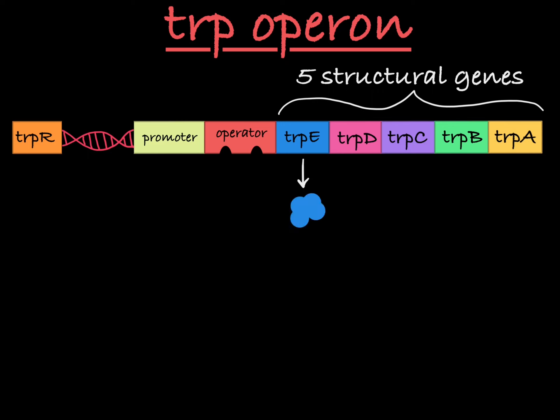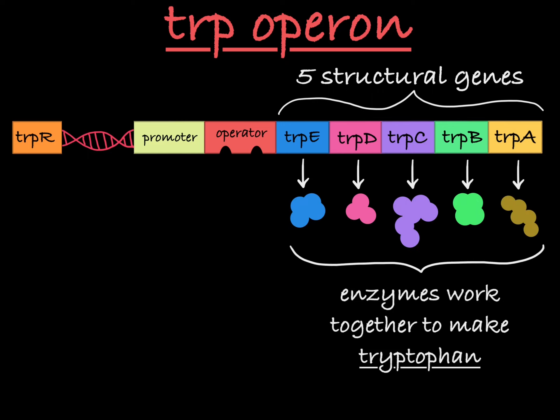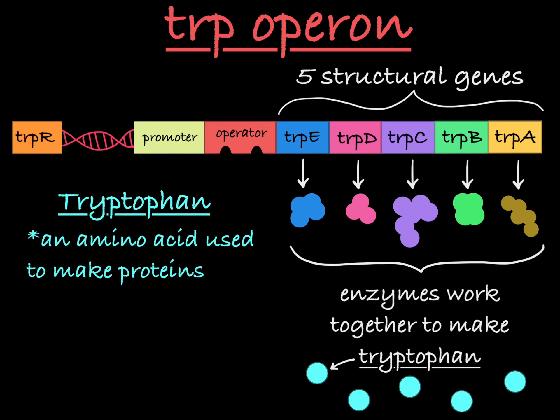These genes each encode enzymes that are necessary for tryptophan synthesis, which is the process of making tryptophan in the cell. Tryptophan is an amino acid that is necessary in the bacterial cell for any protein synthesis. Because proteins are constantly being made in the cell, tryptophan needs to be present at all times for E. coli to survive.